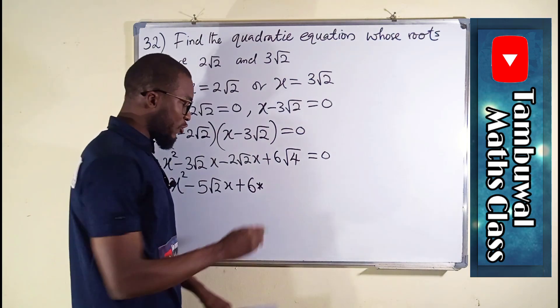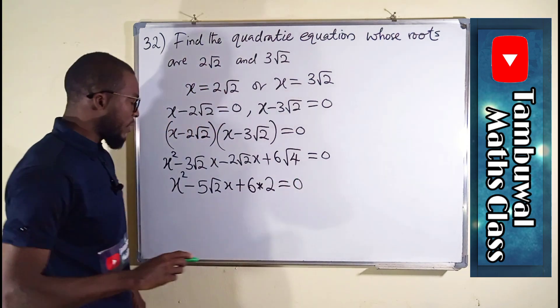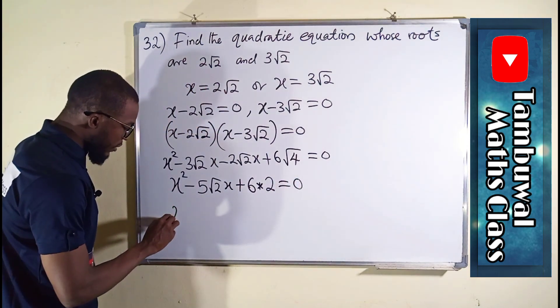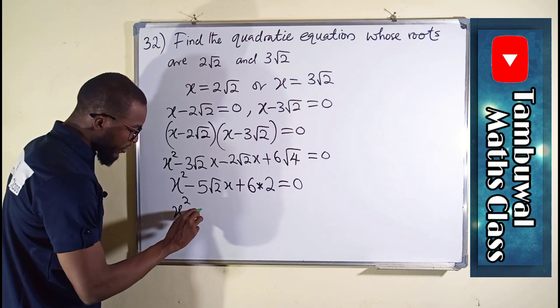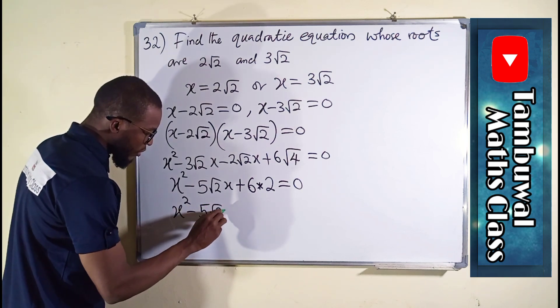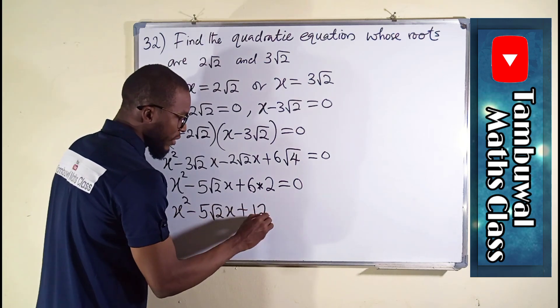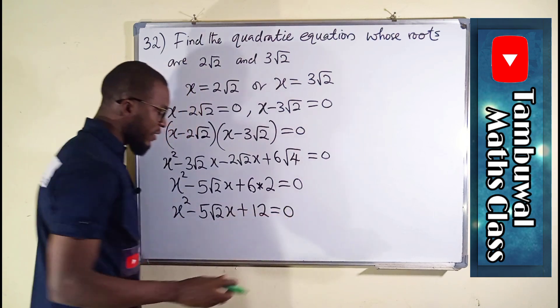But √4, which is the square root of 4, is 2. This is equal to zero. So this is x² - 5√2x, 6 times 2 is 12, and all of this is equal to zero.